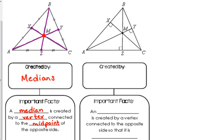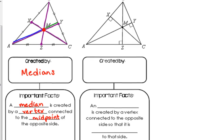Now, the centroid is not equidistant from the sides nor the vertex. What goes on here is that the centroid cuts each of those medians into proportional pieces. So the bigger piece, let me use some different colors here. AM is twice the length of MY.